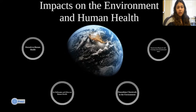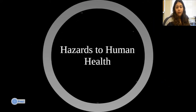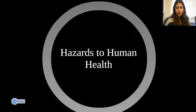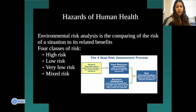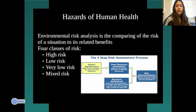The first section covers hazards to human health, including some assessments. The first part talks about environmental risk analysis — the comparing of the risk of a situation and its related benefits. Basically, there are four kinds of risks: high risk, low risk, very low risk, and mixed risk.